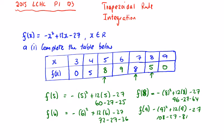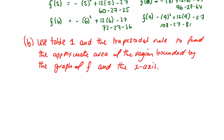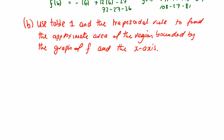So that's the table filled in. We're after the trapezoidal rule in part b. Part b of this question says: use table 1 and the trapezoidal rule to find the approximate area bounded by the graph of f and the x-axis. The trapezoidal rule is h over 2, times y₀ plus y_n plus twice y₁ plus y₂ plus y₃ all the way to y_{n-1}.